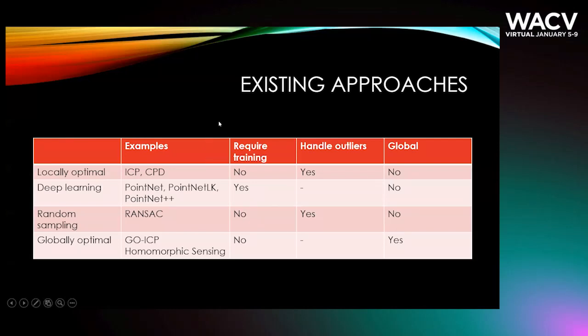Here I've included a very high level summary of the existing methods. Some methods that are locally optimal, for example, ICP and CPD methods that are based on deep learning approaches. They require training and do not necessarily provide the globally optimal solution. Random sampling consensus approaches are specifically designed to deal with outliers by instead of registering all the points, using random samples of the points. And finally, there are some approaches that are based on branch and bound techniques that provide globally optimal solutions, but they were slower than the other existing methods.